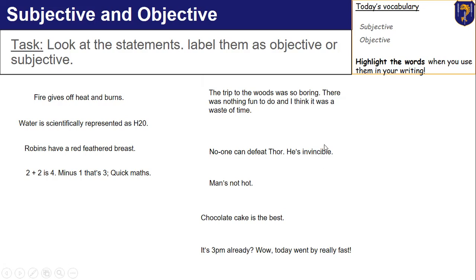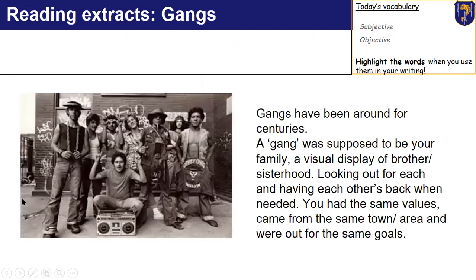Look for those adjectives — what are they implying? What about the adjective 'boring' for the woods — what is that implying, what is their viewpoint? Now let's have a look at an example question and example extract. Remember, for this paper you will get two extracts, both non-fiction, written in different time periods on a similar theme. The theme we're going to look at for the extracts is going to be gangs.